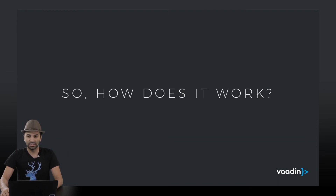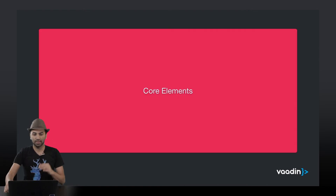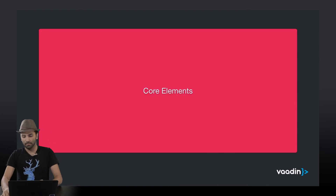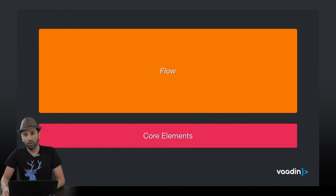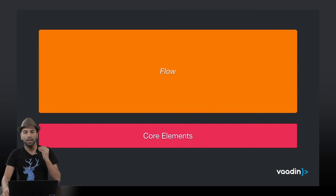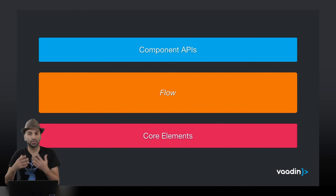So how does it work? We can summarize everything in VADEN 10 in three main tools. The core elements — they are web components, standard web components written totally on the front-end side. We have Flow, which is the Java connector, and we have the components API, which are the server-side APIs, if you want to use the components on the server-side.